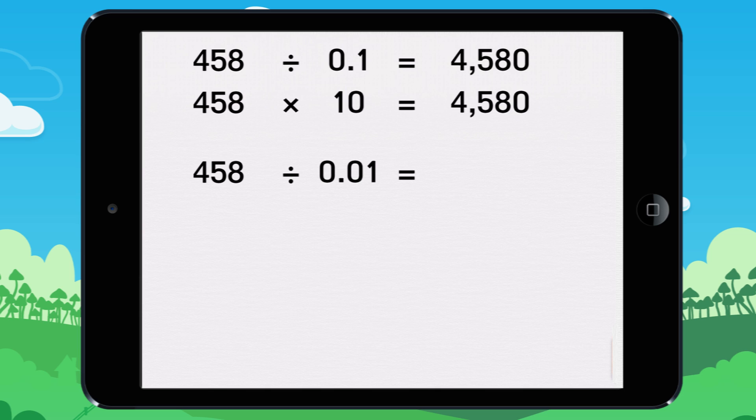To divide a number by 0.01, do the same thing as you did to multiply by 100. Write two zeros at the end of the number. 458 divided by 0.01 equals 45,800.